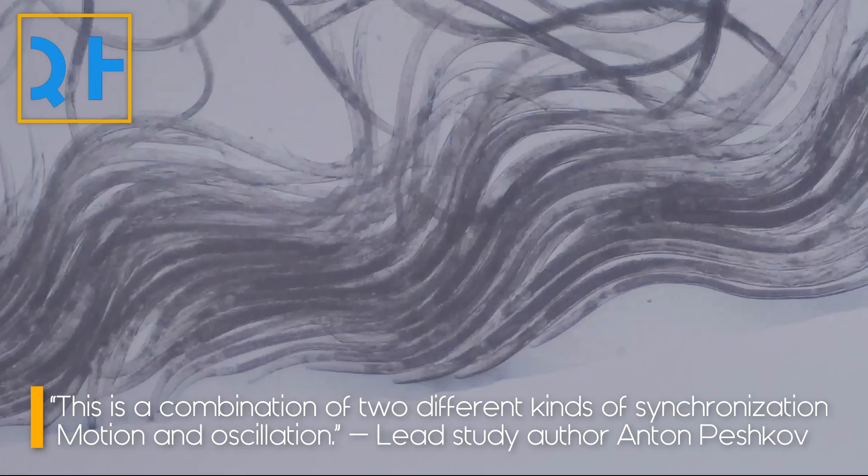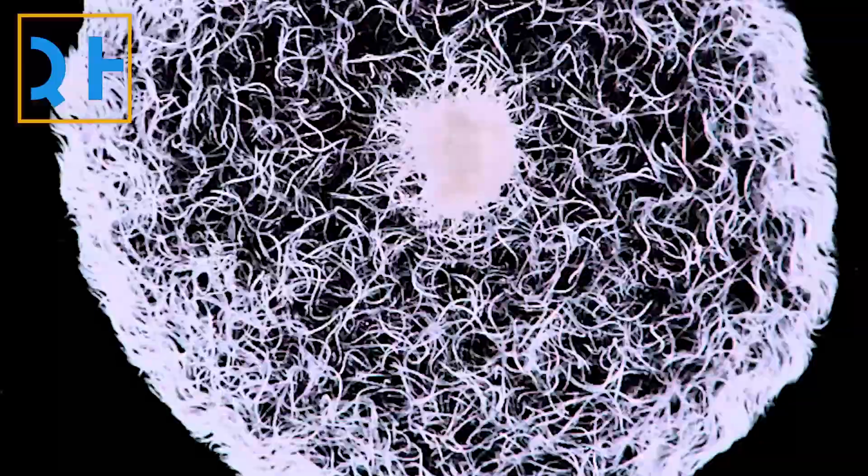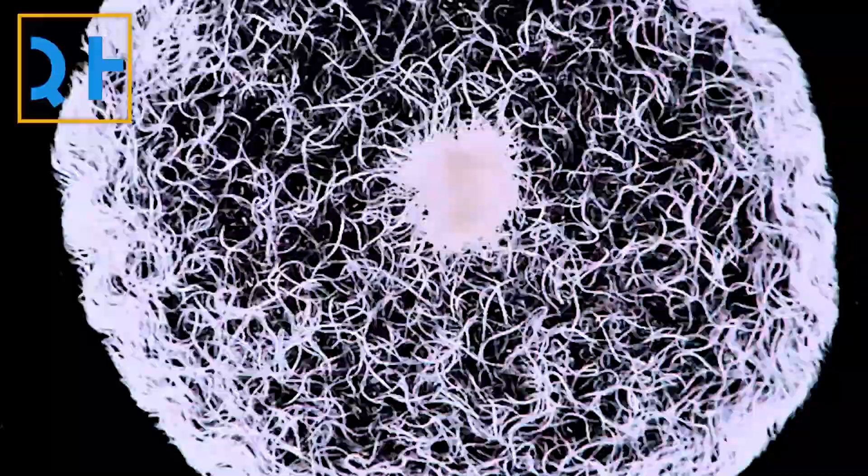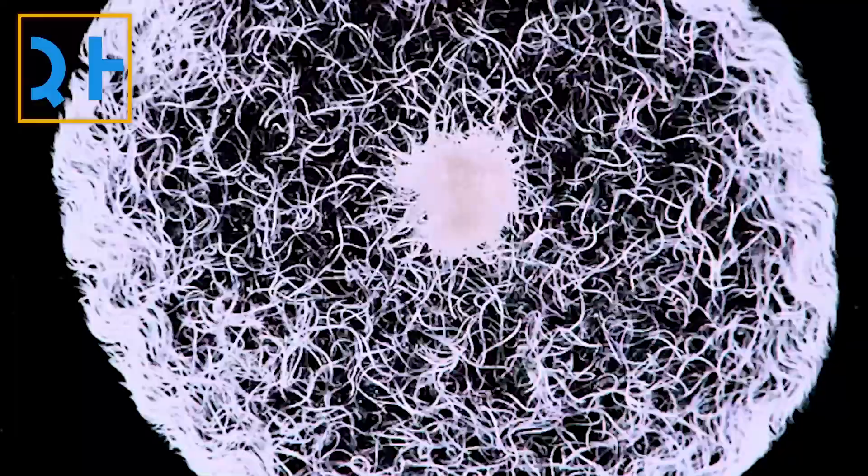Scientists don't know how or why vinegar eels swim this way, but they know they're a force to be reckoned with. Once the nematodes started swimming in sync, they exerted a force on the droplet that could move an object more than 100 times the weight of their bodies.